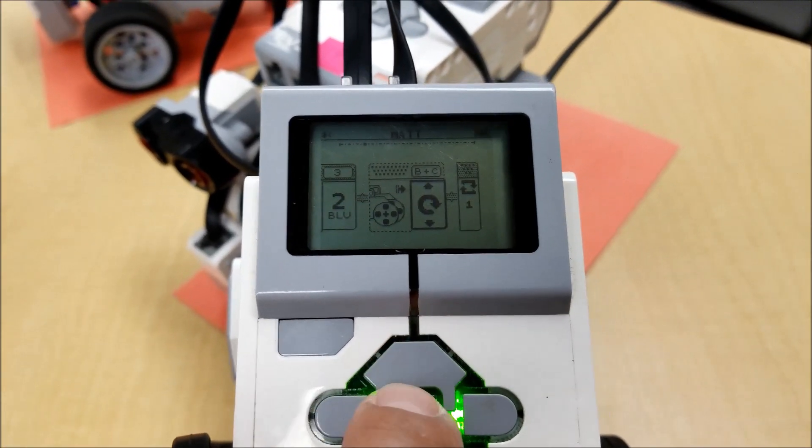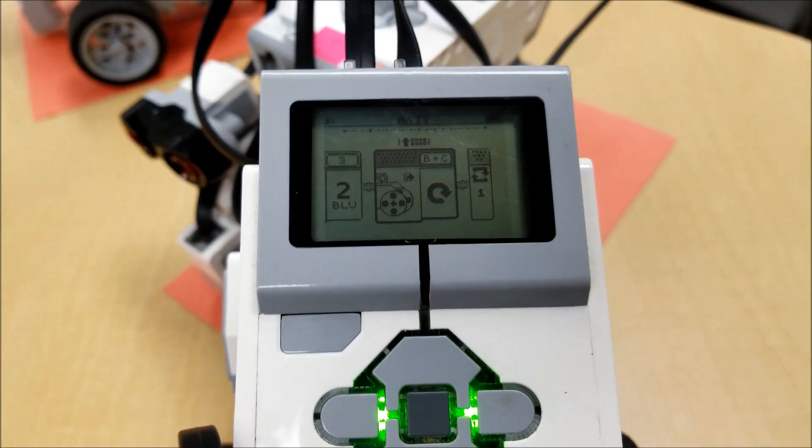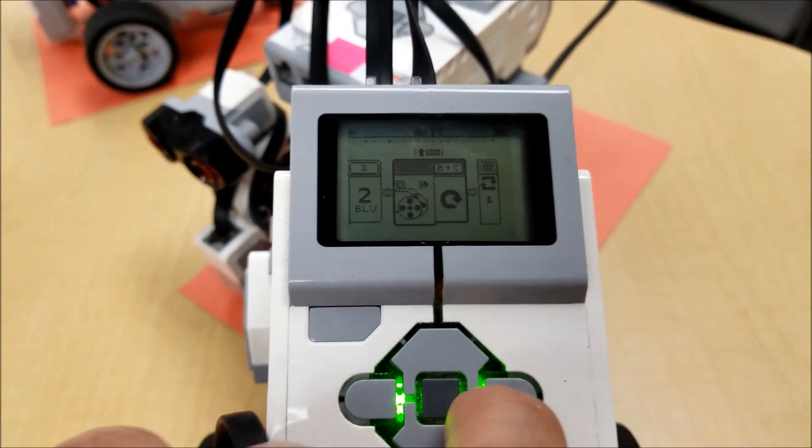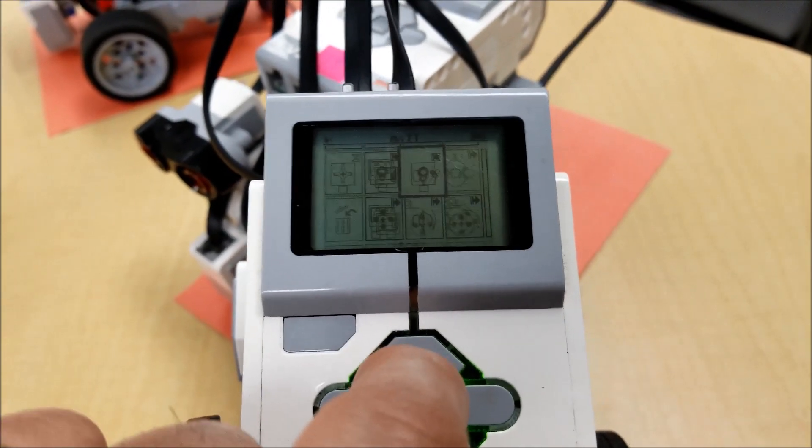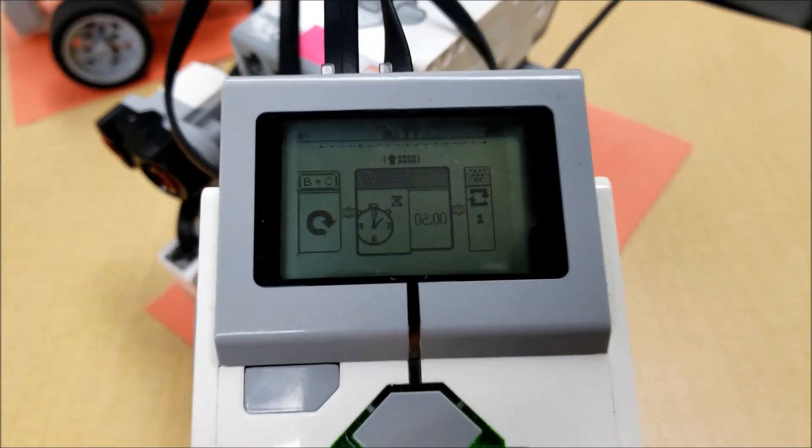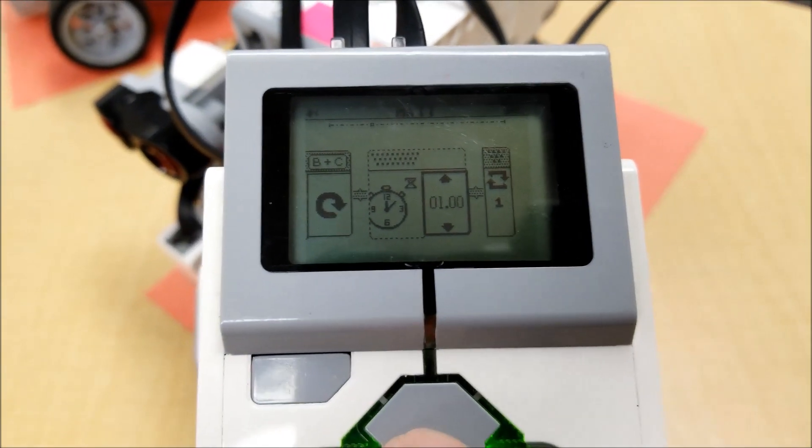We want the robot to turn around. So if it sees blue, turn around, and obviously we want to put a time on this. Two seconds is too long, so I'm going to drop this to one second.